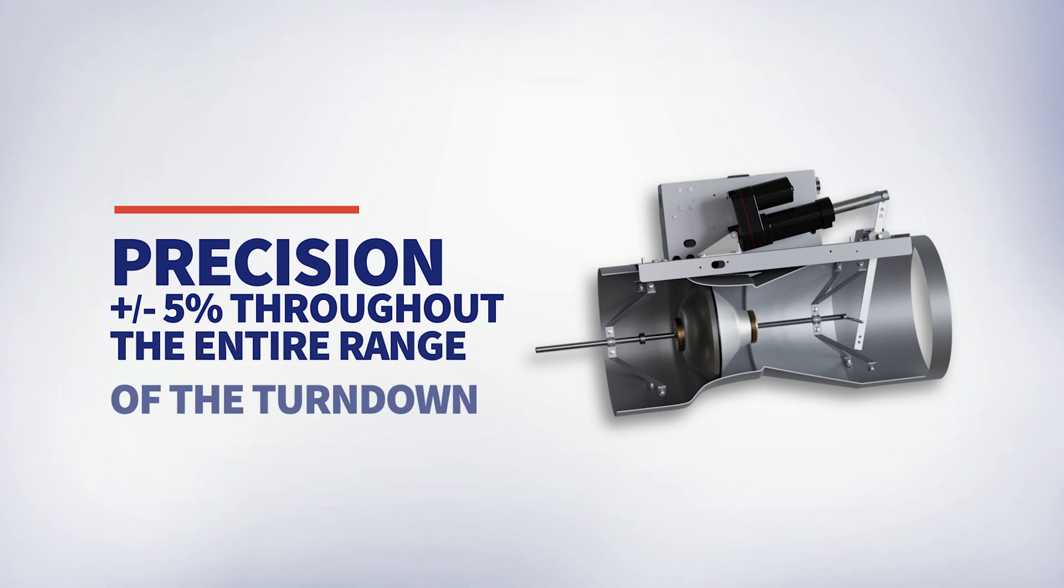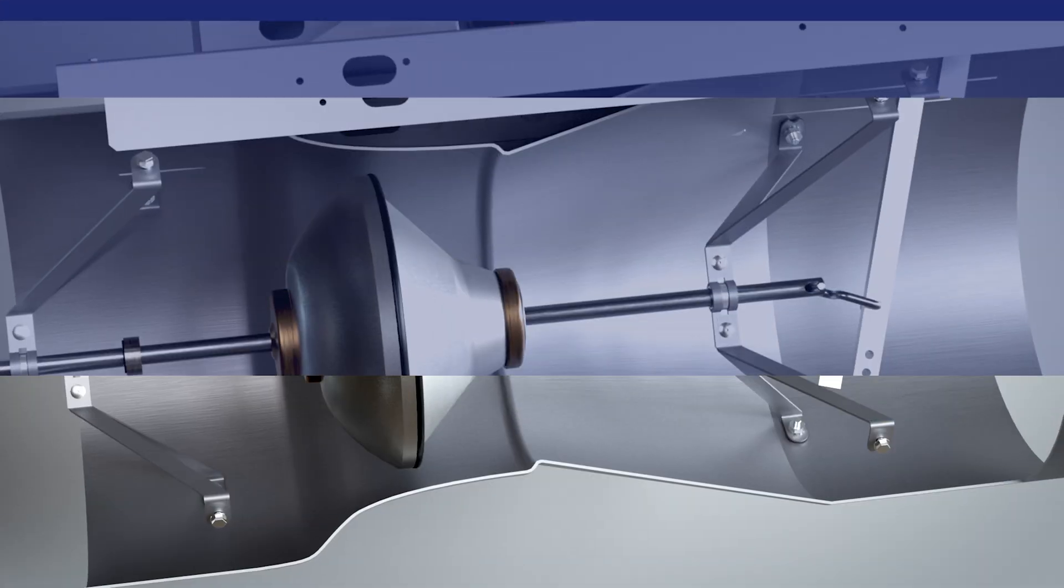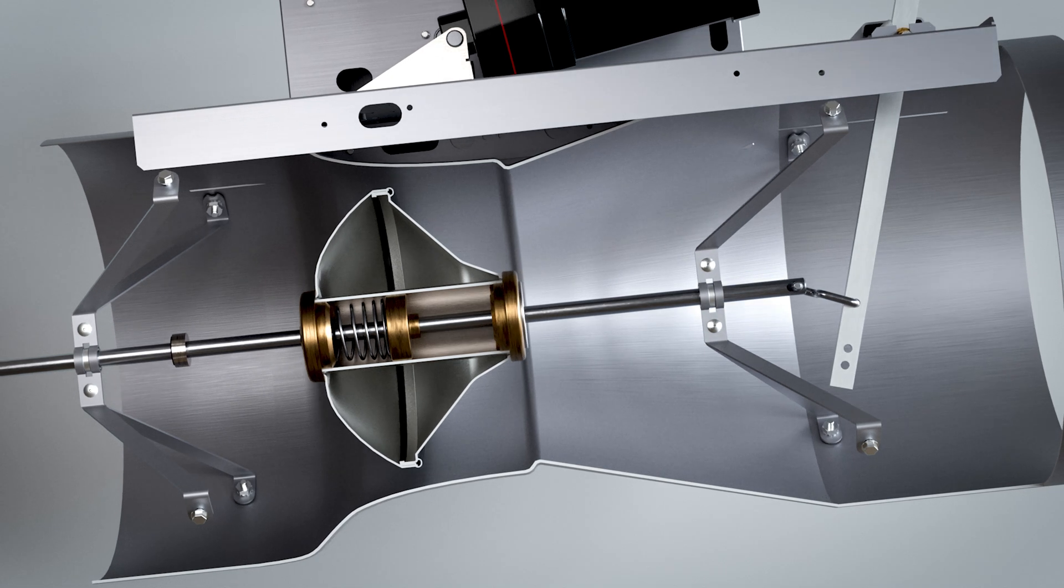So how does the Phoenix valve maintain precision without moving the actuator? The secret is sealed inside the cone: this spring. The pressure control comes from the spring package that is designed to respond to pressure changes with predictable results.